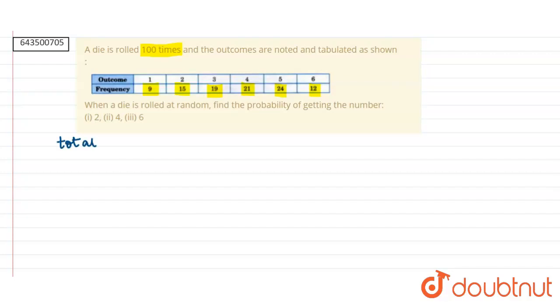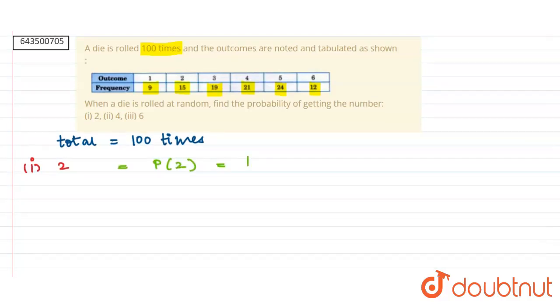Total outcomes equal 100. In the first part, we have to find the probability of getting number 2, which equals P(2). This implies that 15 upon 100 will be our P(2). Hence, by simplifying and dividing by 5, we get 3 upon 20, and this is the answer for our first part.